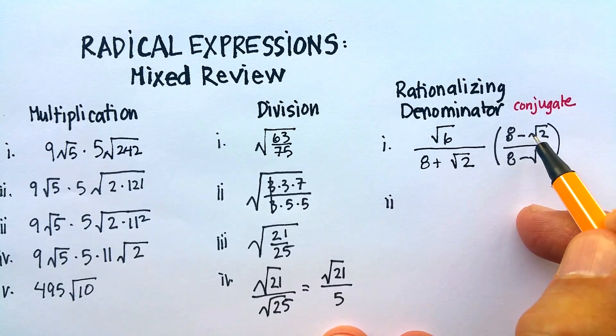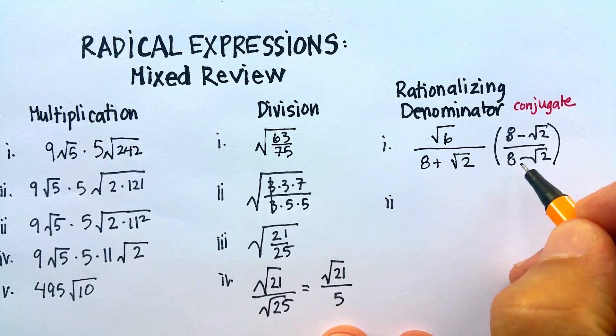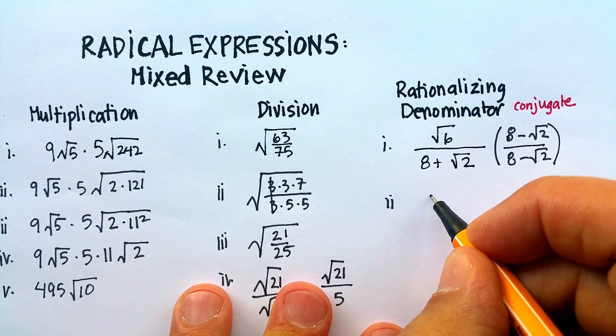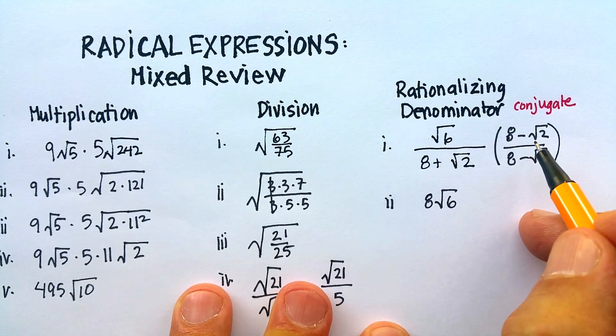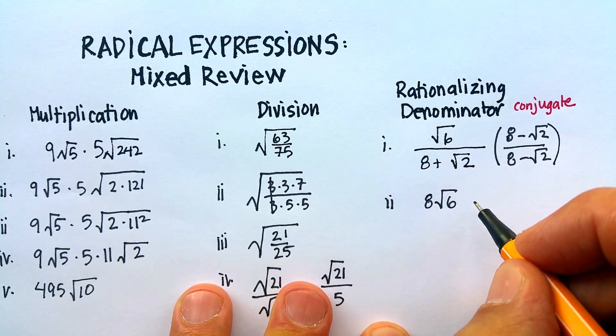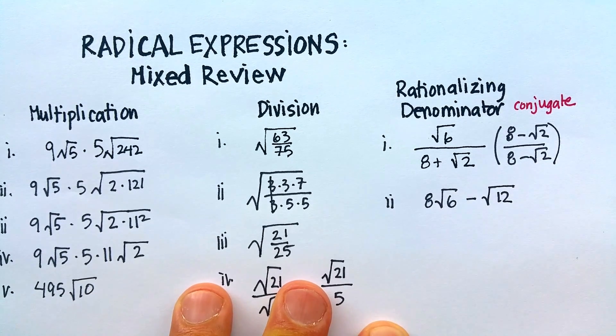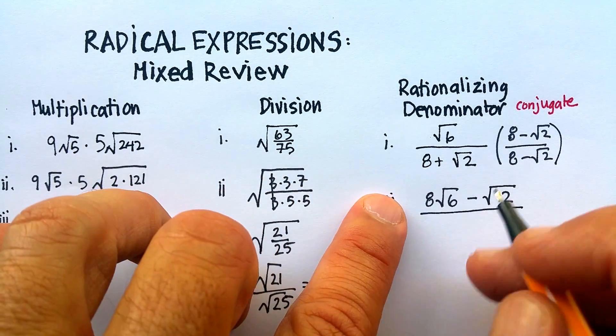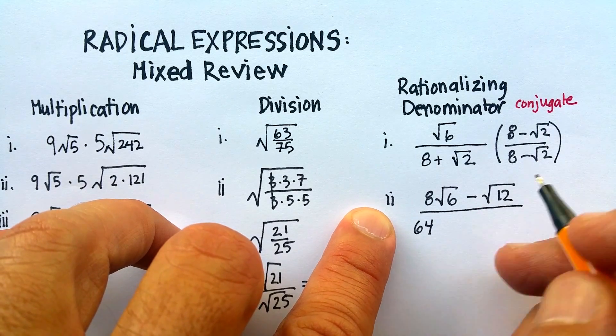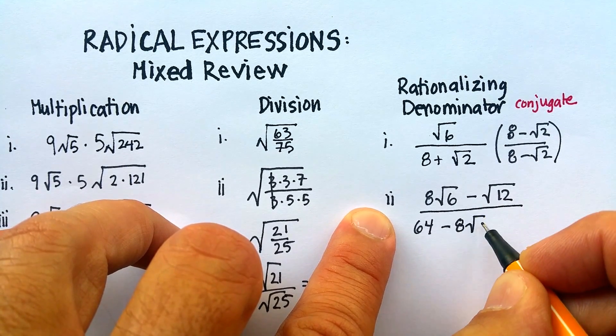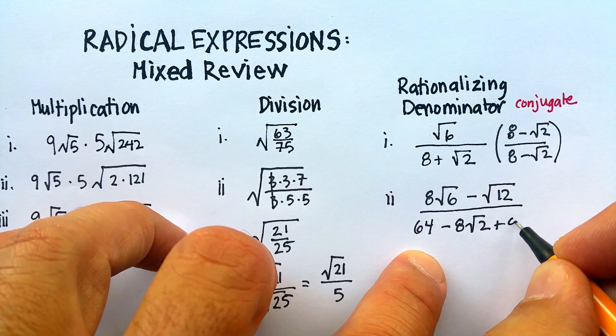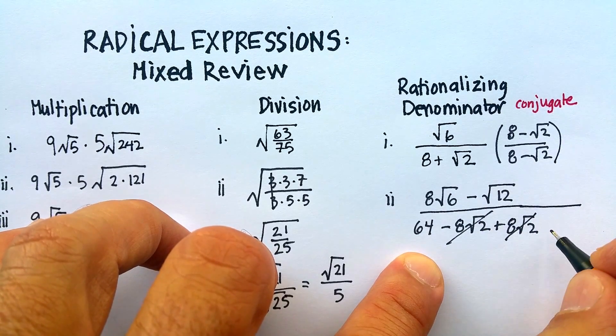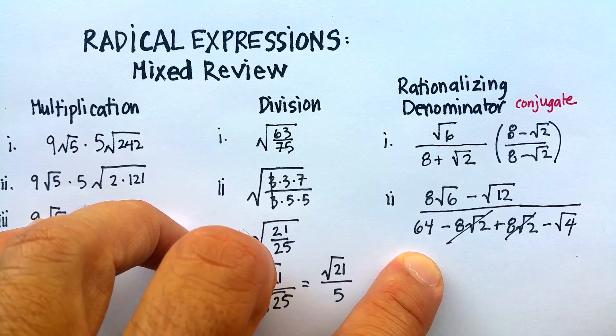So now I've essentially got two simpler problems. I'm going to multiply this monomial times this binomial, and then this binomial times this binomial. Let's start at the top, the numerator. 8 times radical 6 is 8 radical 6. Negative radical 2 times radical 6 is a negative radical 12, which I know I can reduce further. Down here I've got 8 times 8, 64. 8 times negative radical 2 is minus 8 radical 2. This is going to be plus 8 radical 2. Those are going to cancel. And then finally, radical 2 times negative radical 2 is minus radical 4, or just 2.